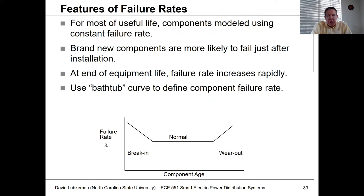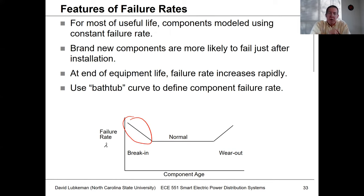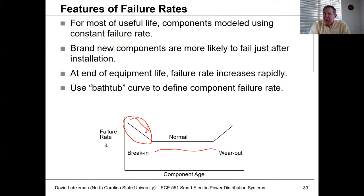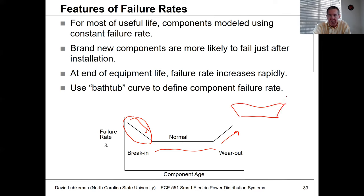The failure rate is often defined by what we refer to as a bathtub curve. During the break-in period, a newly installed component may be more susceptible to failure due to manufacturing defects. After a period of time, this stabilizes down to a flat or constant failure rate, which is normally what we assume in our calculations. When the component starts to wear out, the failure rate increases with time until eventually failure occurs. It's called a bathtub curve because of its shape — a common phrase in reliability analysis.